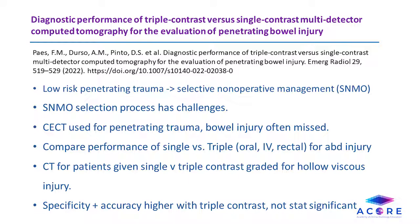This retrospective study aims to compare the diagnostic performance of single versus triple-contrast CT for detection of penetrating abdominal injury. 143 patients with abdominal trauma who received a CT prior to laparotomy were included. 45 patients were found to have bowel injury — 35 received single-contrast and 10 received triple. 98 patients had no bowel injury at laparotomy, divided 50/50 between single and triple-contrast CT. The CT examinations were reviewed by radiologists and graded based on the probability of hollow viscus injury. The authors found that specificity and accuracy were higher with triple-contrast than single-contrast, although results were not statistically significant. This study suggests triple-contrast CT may be useful in future triage of patients with penetrating trauma, though further studies are needed for confirmation.